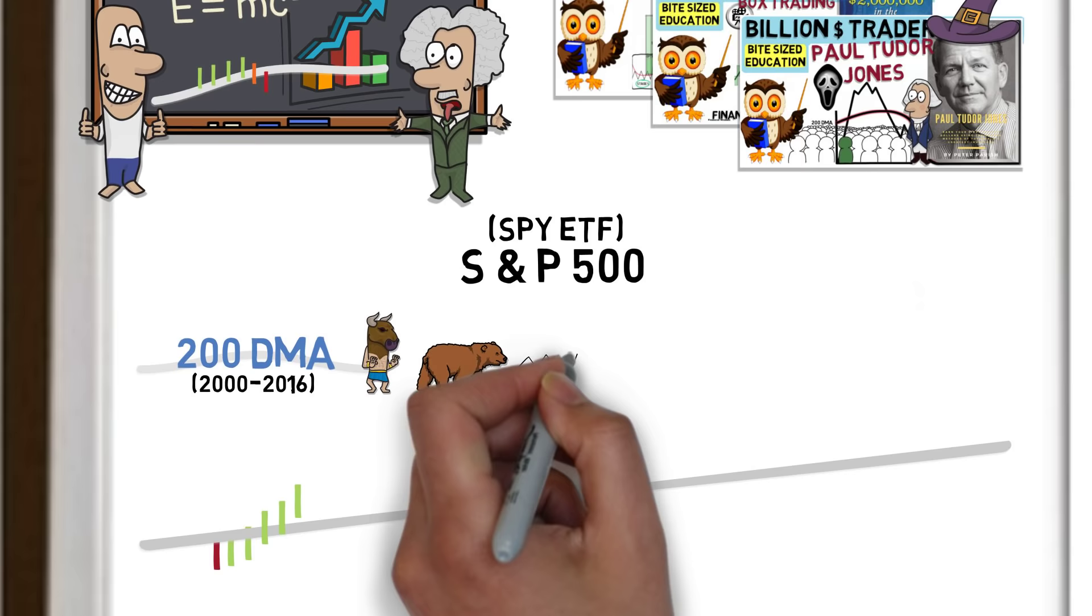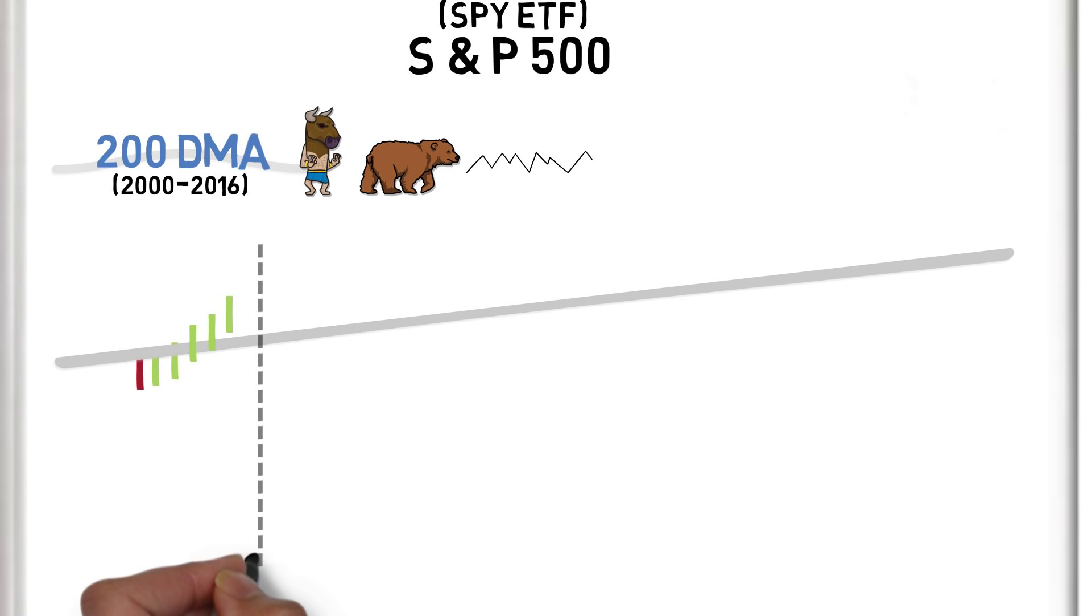A signal should only be acted upon once per month, at the end of each month. Therefore a maximum of 12 trades could be generated per year.